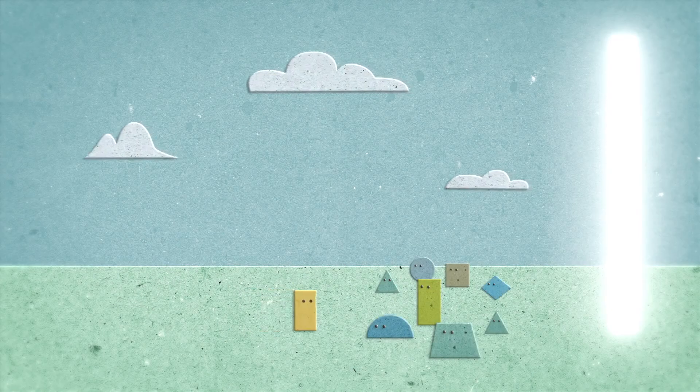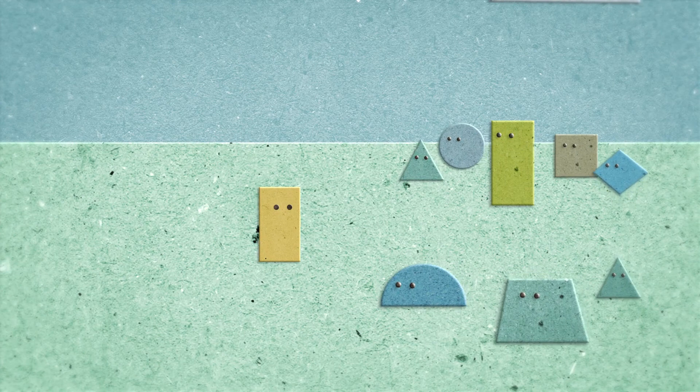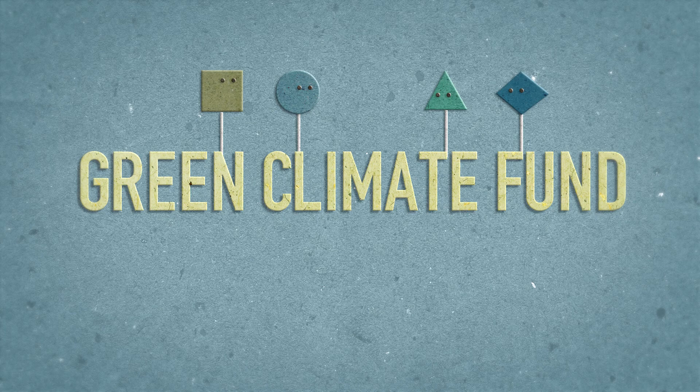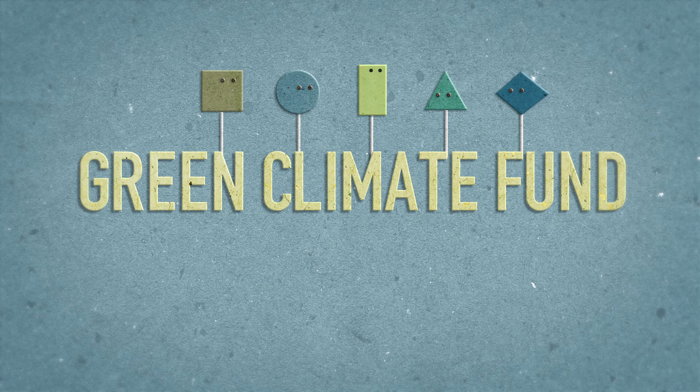Stage 3 is the legal arrangement where the entity and the GCF enter into an accreditation master agreement. This agreement serves as the overarching legal agreement between an entity and the GCF.